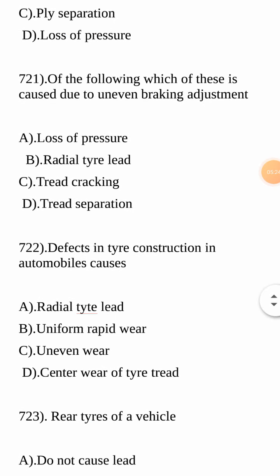Next question: which of the following is caused due to uneven braking adjustment? This is a purely technical and important question. The options are loss of pressure, radial tyre tread, tread cracking, or tread separation. Radial tyre tread is going to be caused by uneven braking adjustment. Your answer is B — radial tyre tread.